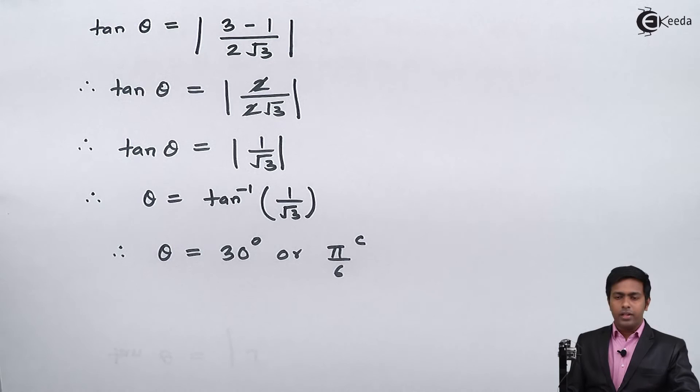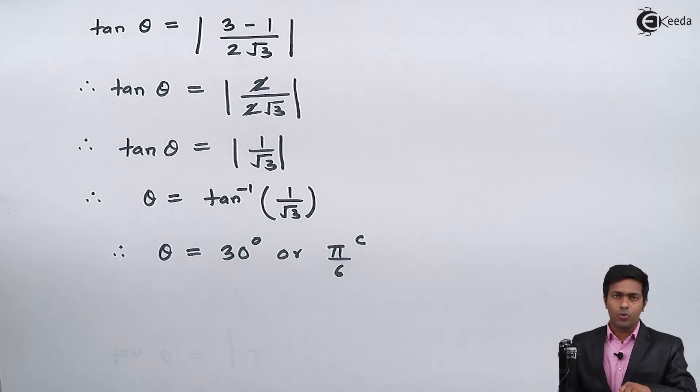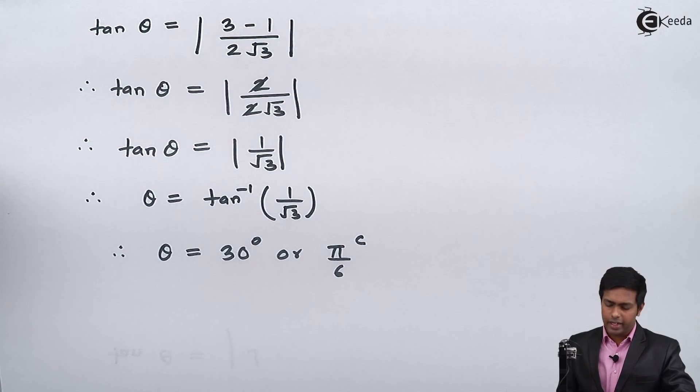So the acute angle between the two lines whose slopes are √3 and 1/√3 is 30 degrees. Thank you.